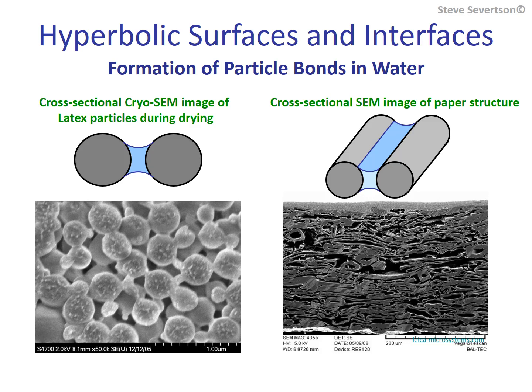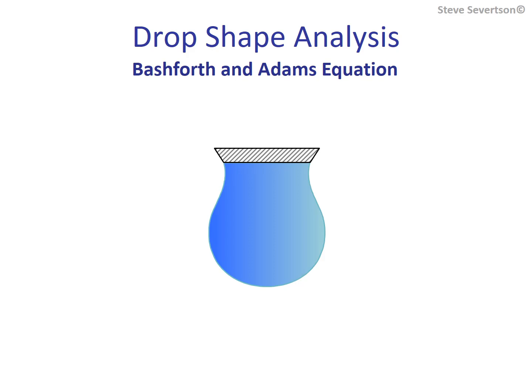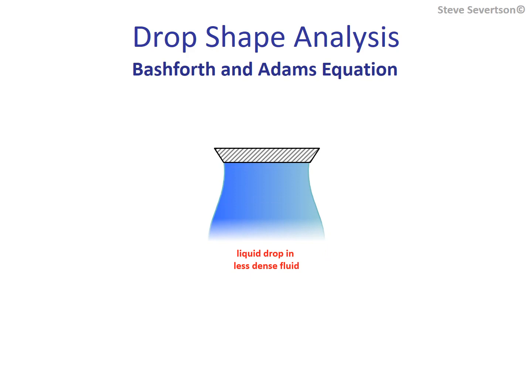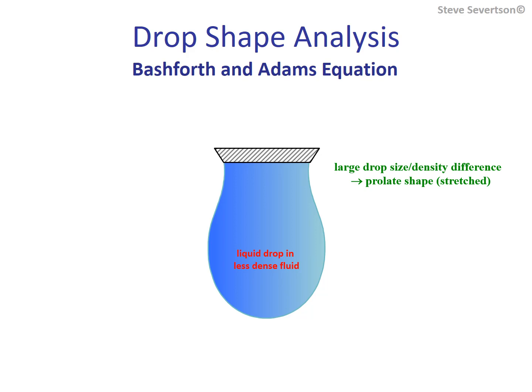To this point, only idealized surfaces and interfaces—spherical and cylindrical—have been considered, and the influence of gravity has been ignored. For small menisci and high capillary-length liquids, this leads to a tolerable amount of error. However, in many situations the gravitational force has a significant influence on the shapes of drops, bubbles, and menisci. For example, consider a pendant drop: when suspended in air, gravitational forces tend to stretch the drop out, while when suspended in a denser liquid, the drop is compressed due to buoyancy.